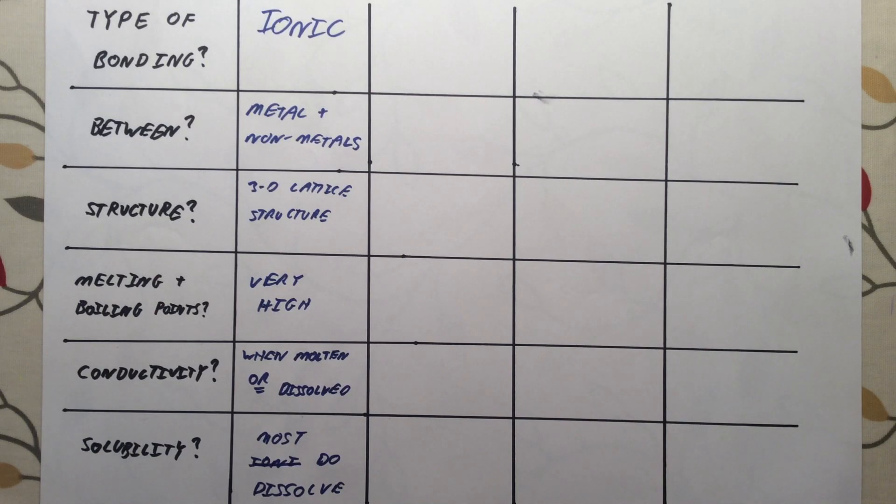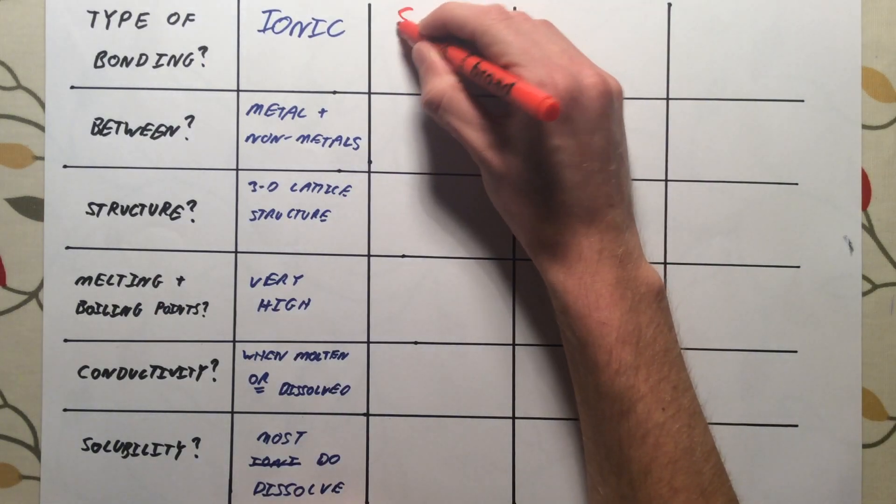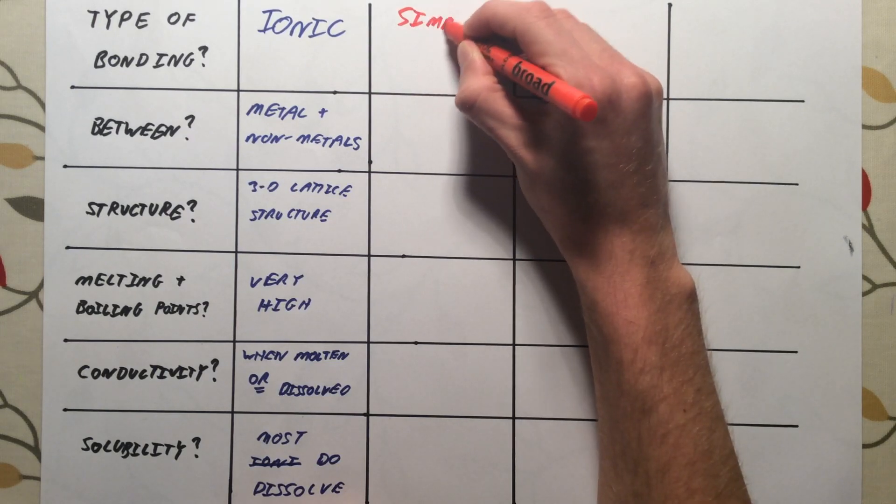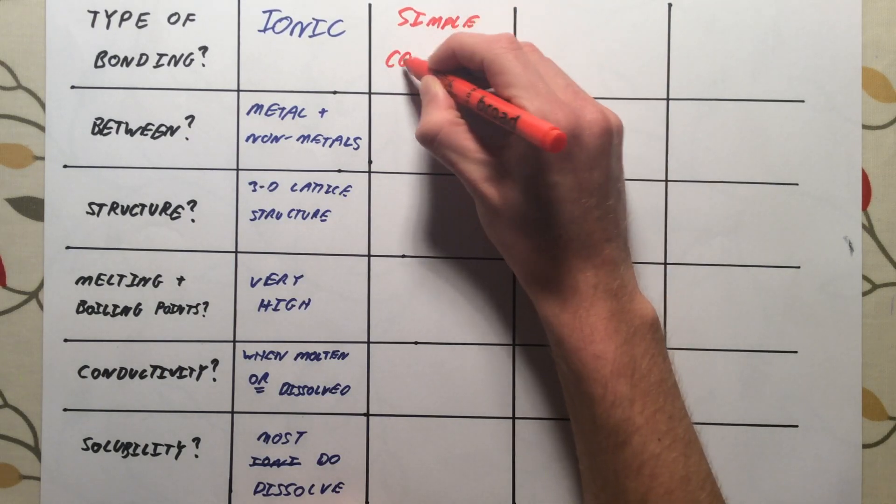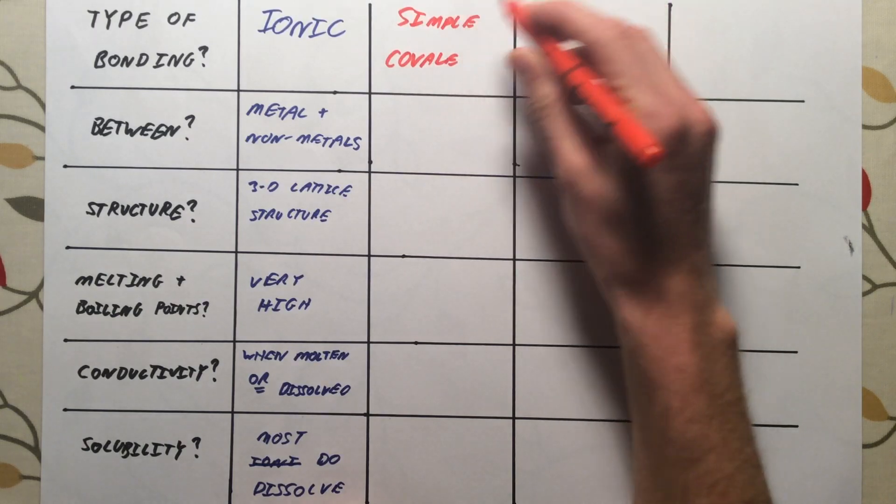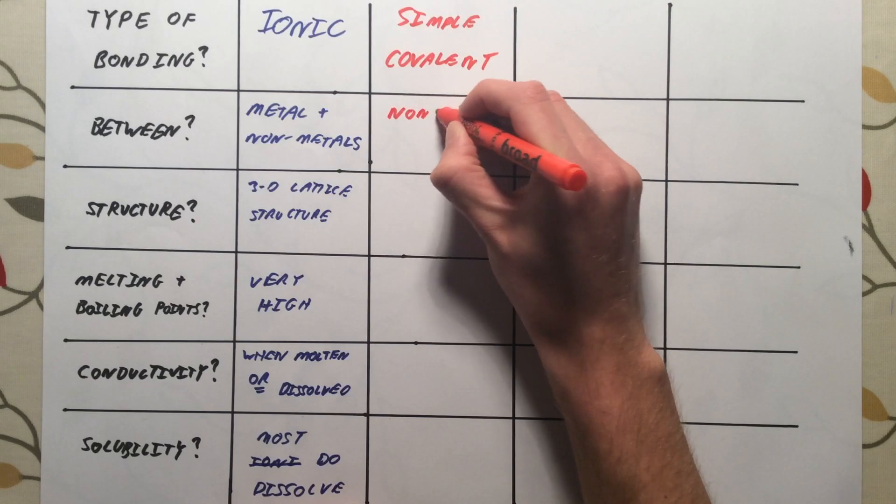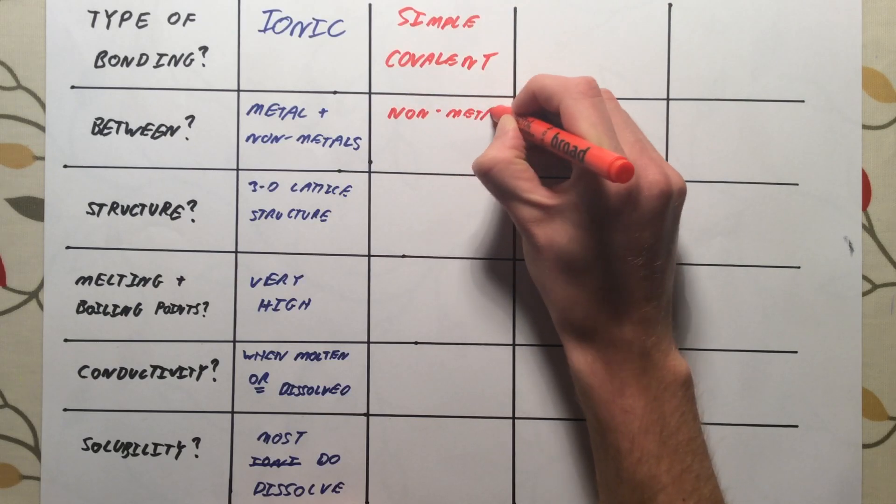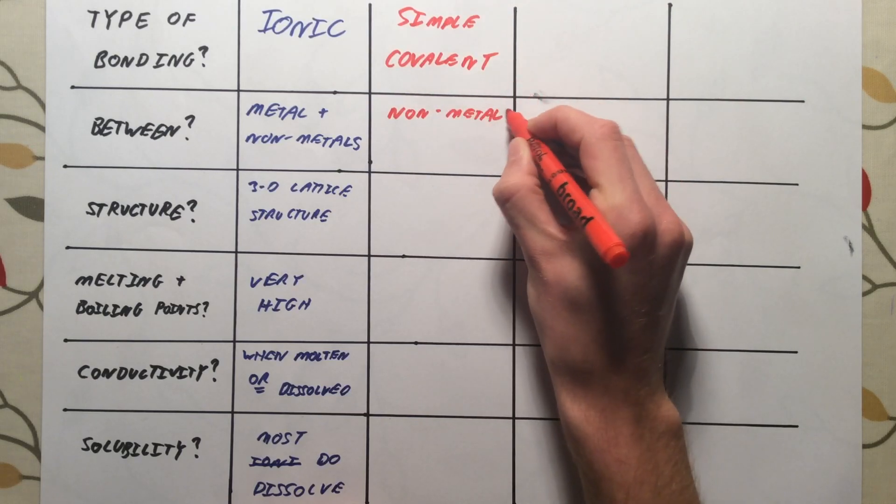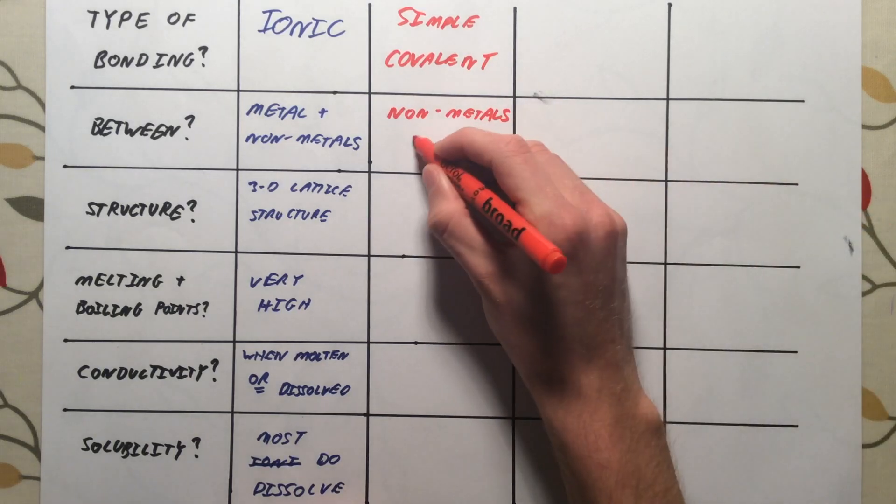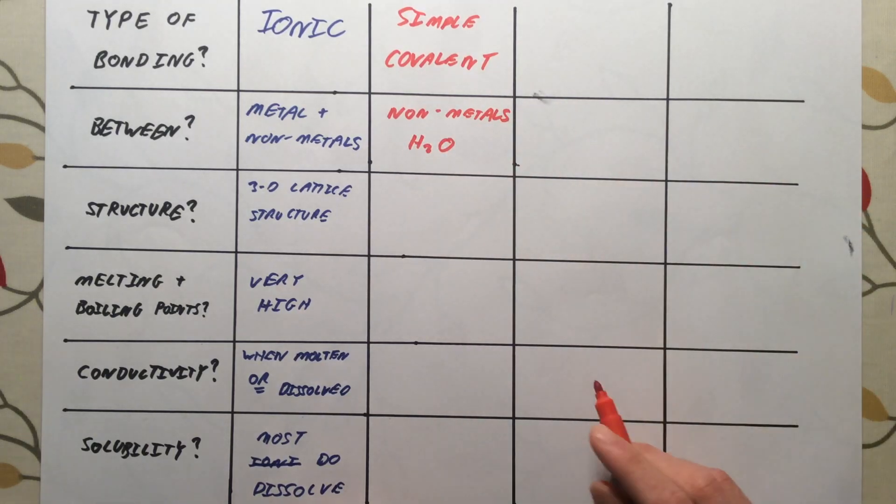The second type of bonding we need to talk about here is simple covalent bonding to form simple molecules. And these were between non-metal atoms. For example, we could have H2O.